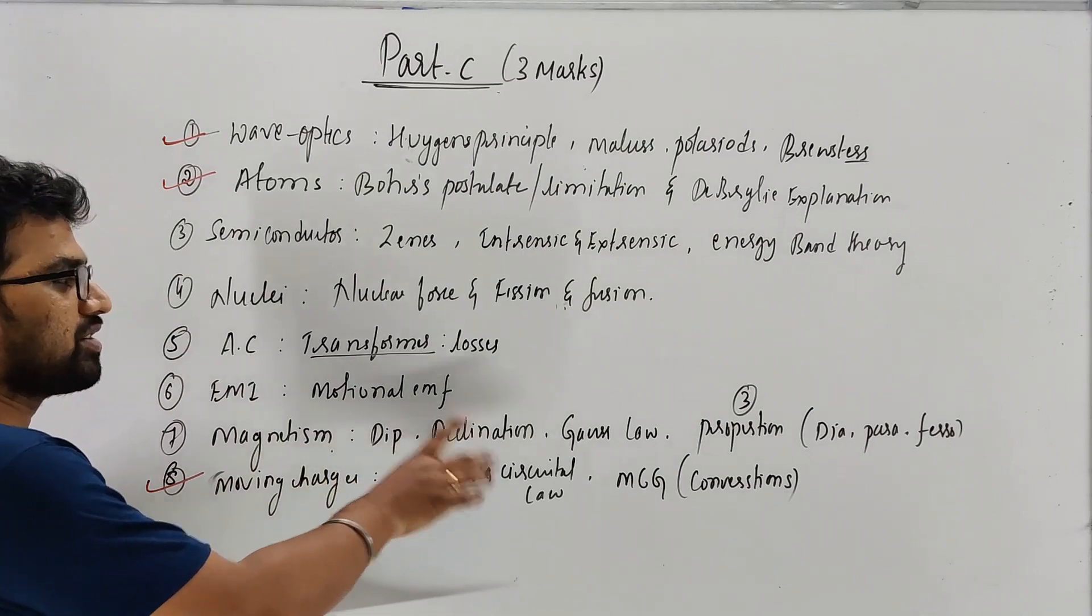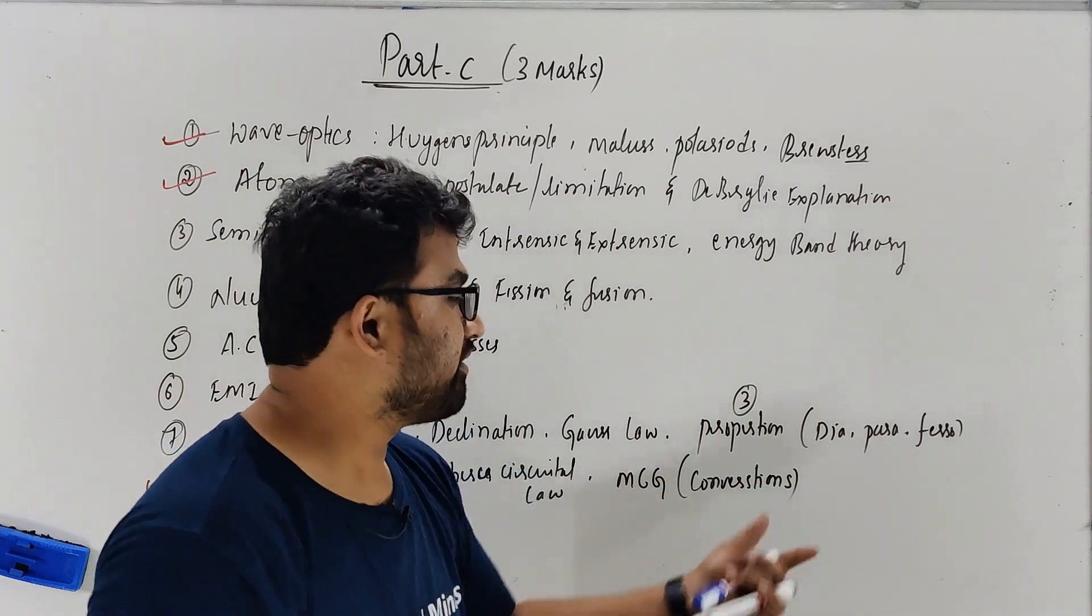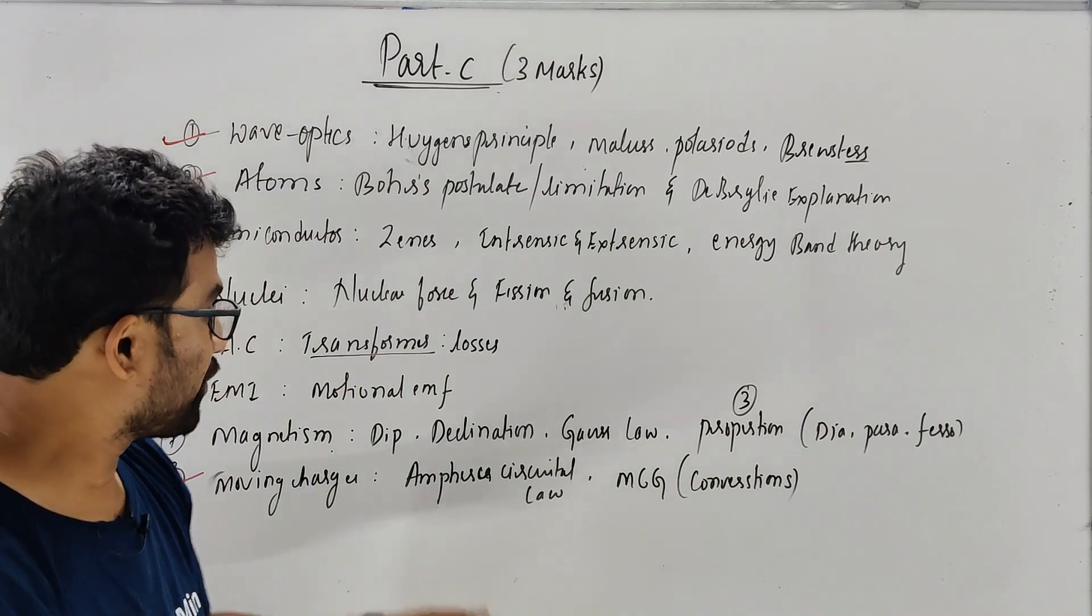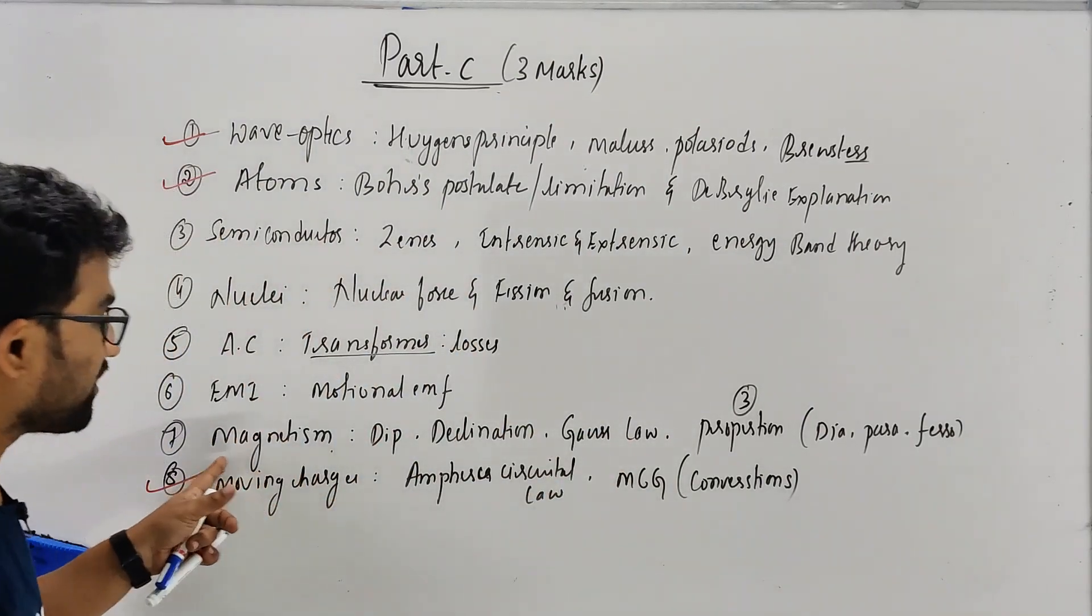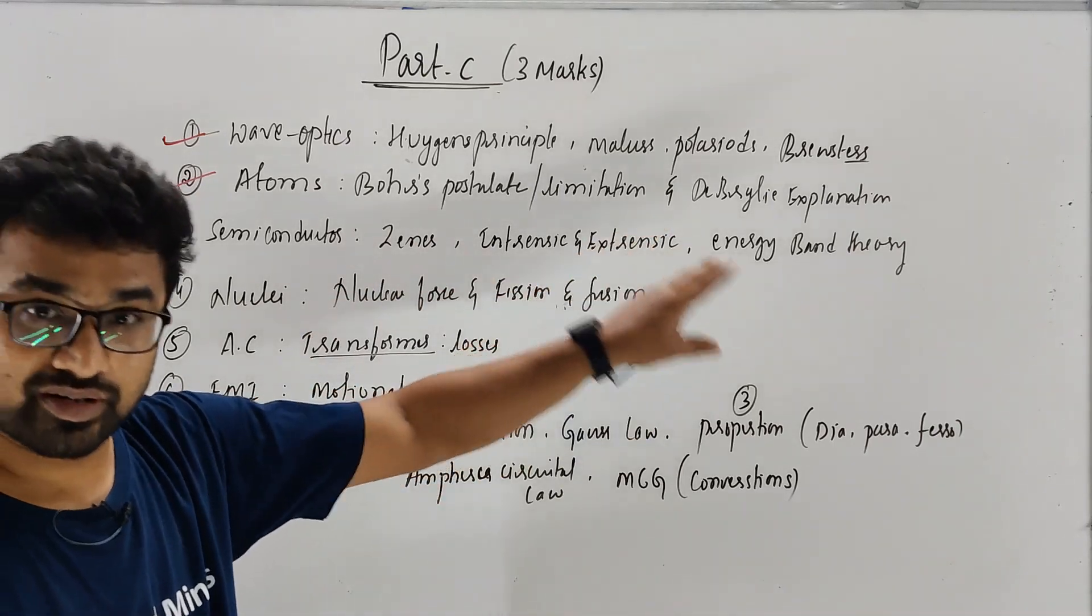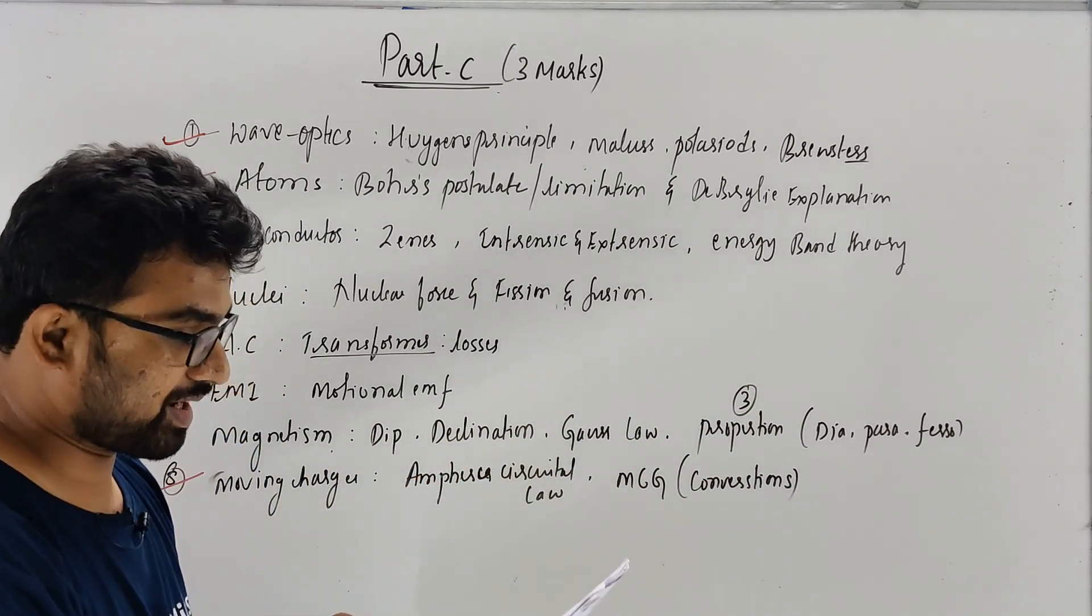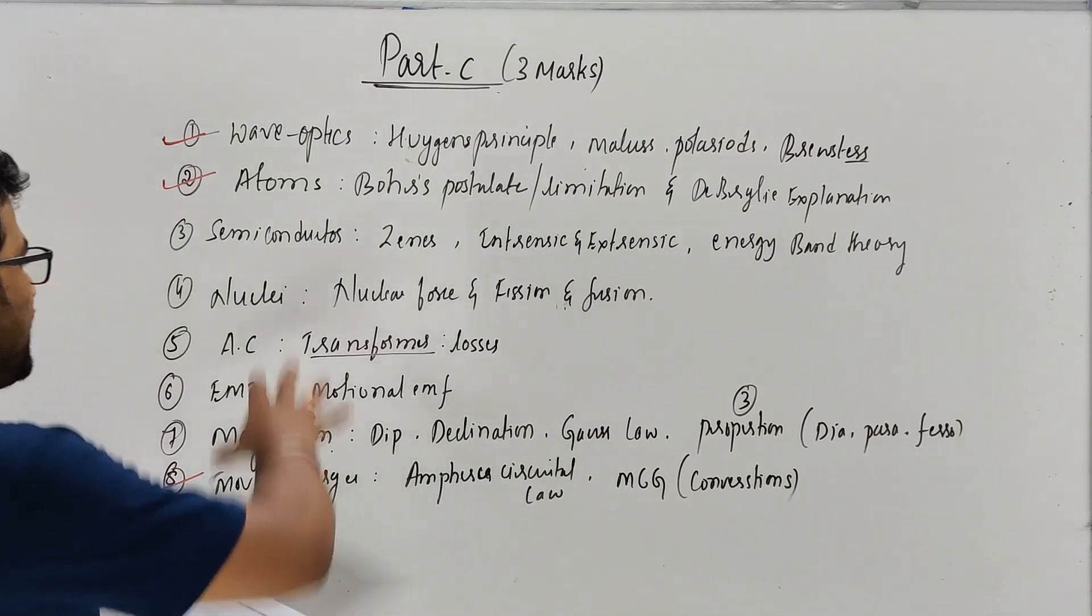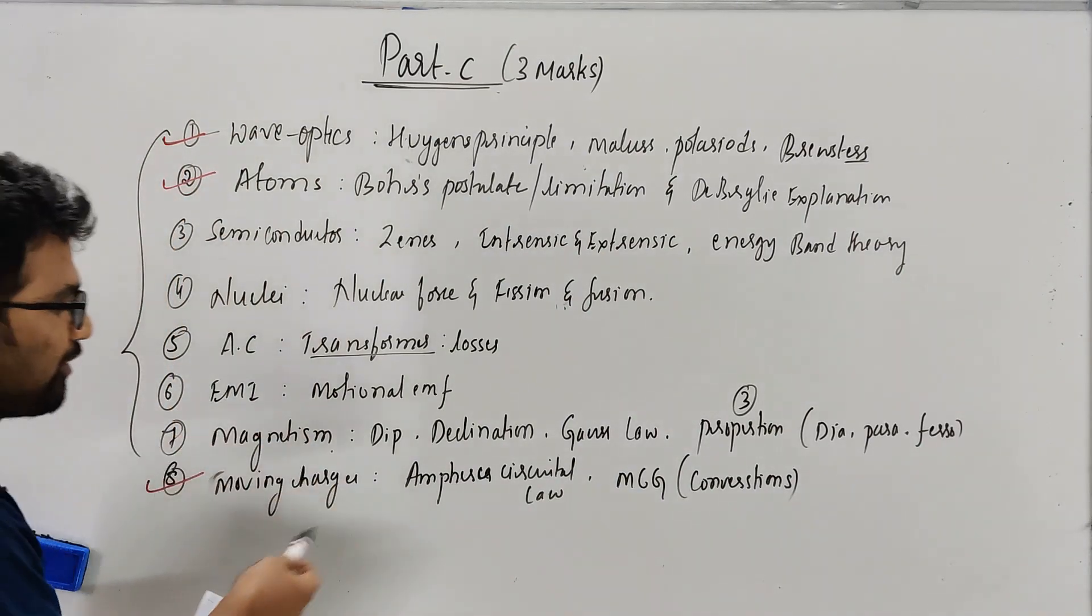Then magnetism and dip declination. This is very easy. This is any two properties. These properties are made of three markers. In the magnetism material, two markers are made of dip declination. So you have to study this chapter also, magnetism and the matter. And moving charge magnetism. See, this is not my case. You can study these topics.